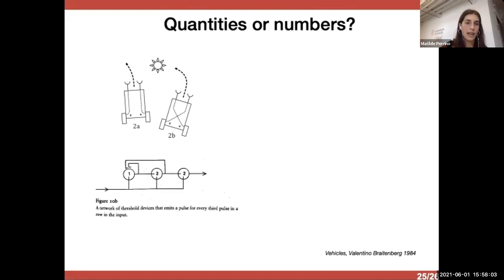And depending on how they are connected, the vehicles can exhibit different behaviors that can be considered, for example, in the case of this image, the two vehicles would both dislike one's sources, but while one could be considered a coward, so escape from the source, the other would have an aggressive behavior because it would attack the source.